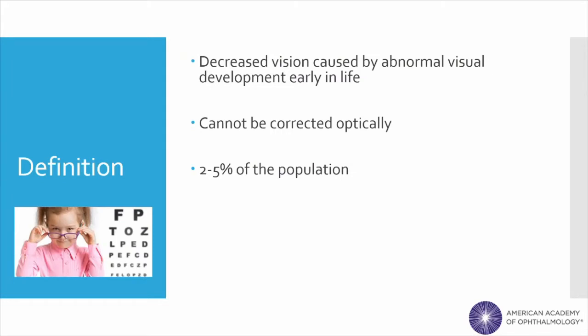Amblyopia is when the vision in one or both eyes does not develop properly during childhood, resulting in decreased vision that cannot be corrected with glasses or contacts. It is also referred to as lazy eye and affects two to five percent of the population. It's most often unilateral but can be bilateral as well. The critical period of visual development occurs from birth to around seven to eight years of age. During this time, if amblyopia is detected, there is still an opportunity for the child to regain vision with appropriate treatment. For this reason, it is critical for ophthalmologists and primary care physicians to be familiar with the classic presenting signs, symptoms, and causes of this condition.